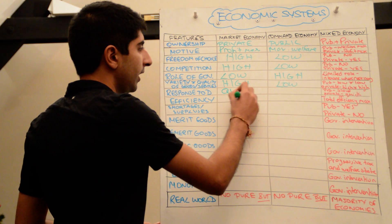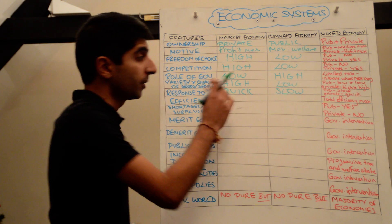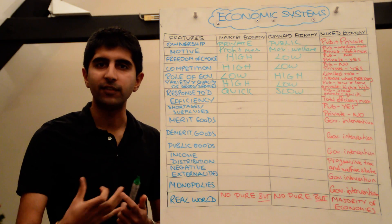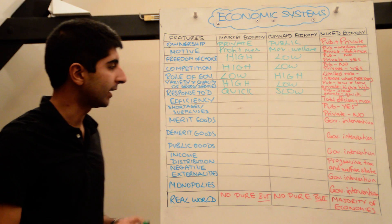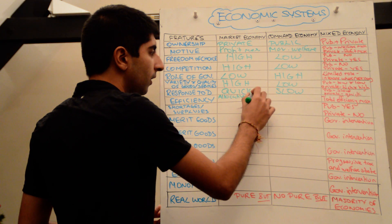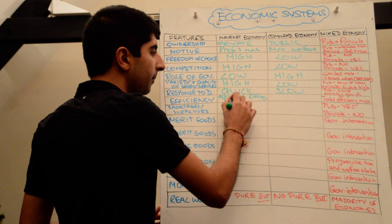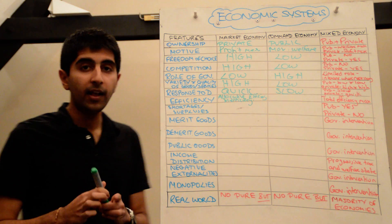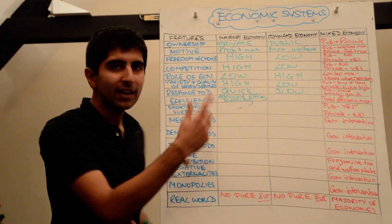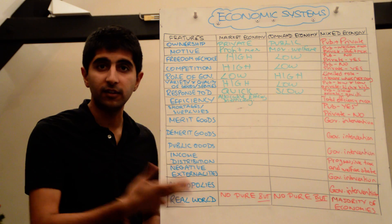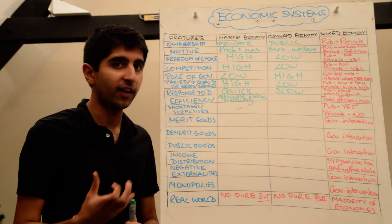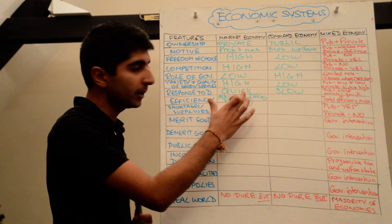Responsiveness to demand is going to be quick in market economies and slow in command economies. In market economies, you want to be the first mover — the first firm to react to an increase in demand — so you can maximise your profits. There is no such incentive in a command economy. Regarding efficiency, there is going to be allocative efficiency in one sense in market economies — the wants and needs of consumers being met, quick response to demand — but there will also be some inefficiency in terms of market failures. So yes, some allocative efficiency where markets work freely, but where free markets cause market failures, there is going to be inefficiency there.